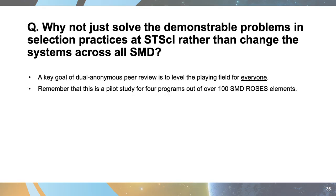Another highly upvoted question: why not just solve the demonstrable problems in selection practices at the Space Telescope Science Institute rather than change systems across all of NASA's SMD? We would actually dispute that there are problems in selection practices at Space Telescope — we think they run an extremely competent, fair, and thorough review. But the key goal of dual anonymous is to level the playing field for everyone. And remember, this is a pilot study for just four programs out of over 100 SMD ROSES elements.